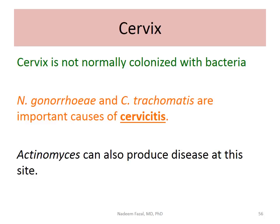The cervix is not normally colonized with bacteria. We have the anterior and posterior fornix of the vagina, but the cervix is protected. However, if you see inflammation of the cervix — the head of the uterus bulging into the upper wall — and you can isolate Neisseria gonorrhoeae or Chlamydia trachomatis, that may be an important cause of cervicitis. Actinomyces can also produce disease at this site.